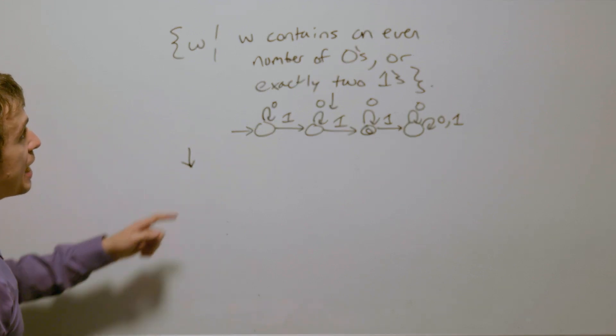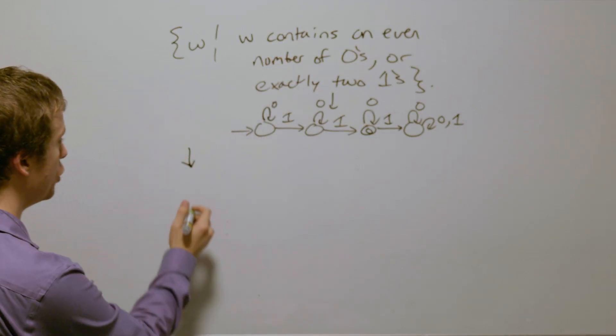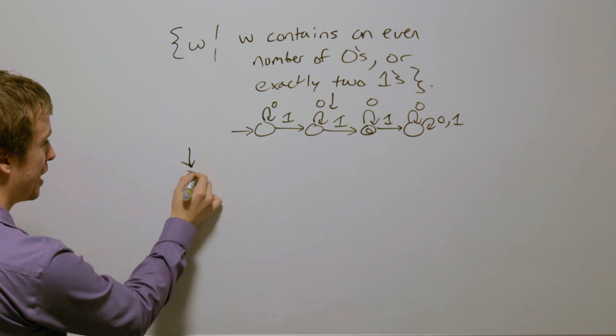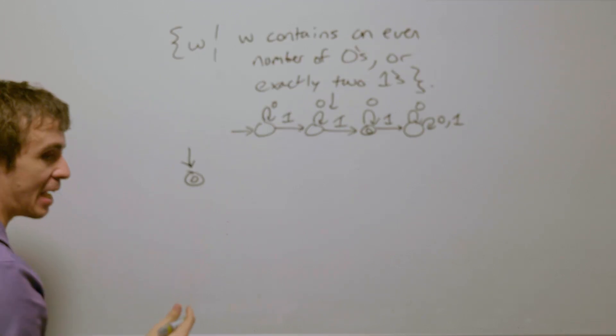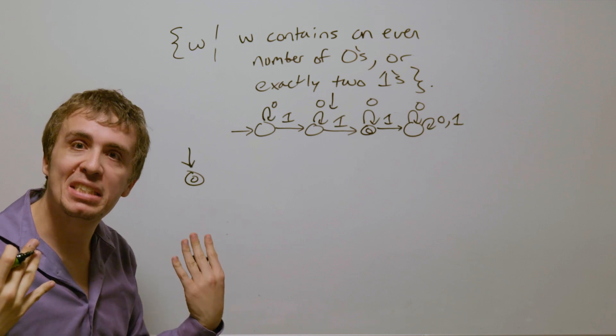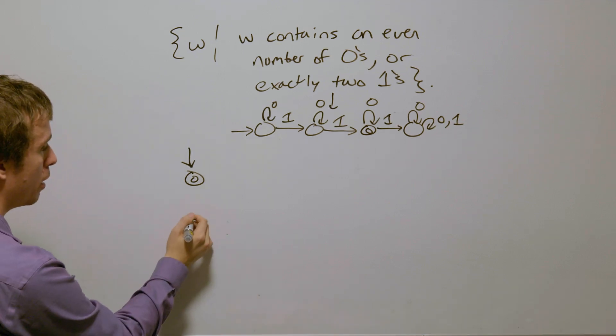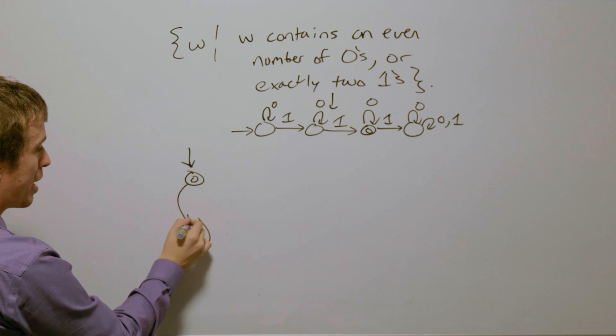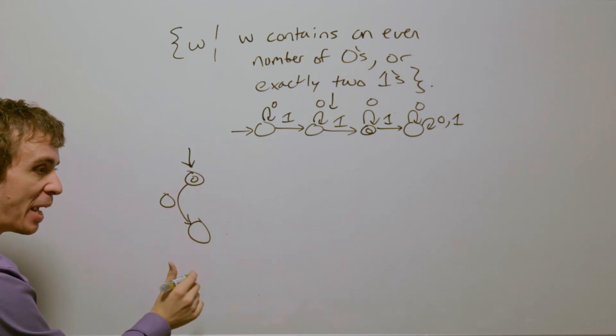and then down this column, I'm going to make a tiny DFA for an even number of zeros, and that's just going to involve two states. So the state at the beginning is going to be final because that's an even number of zeros so far, namely zero, and if we read a zero,